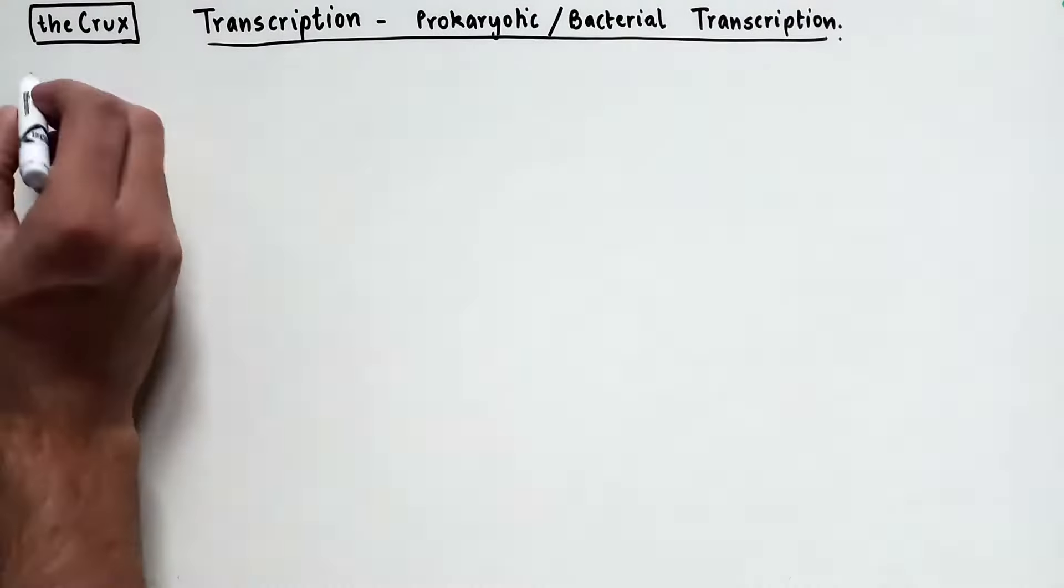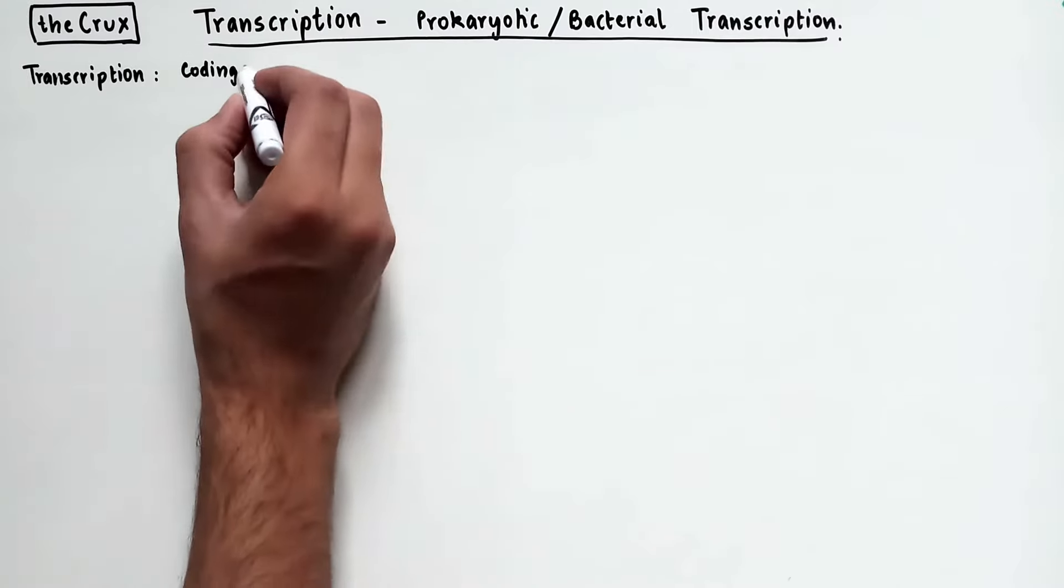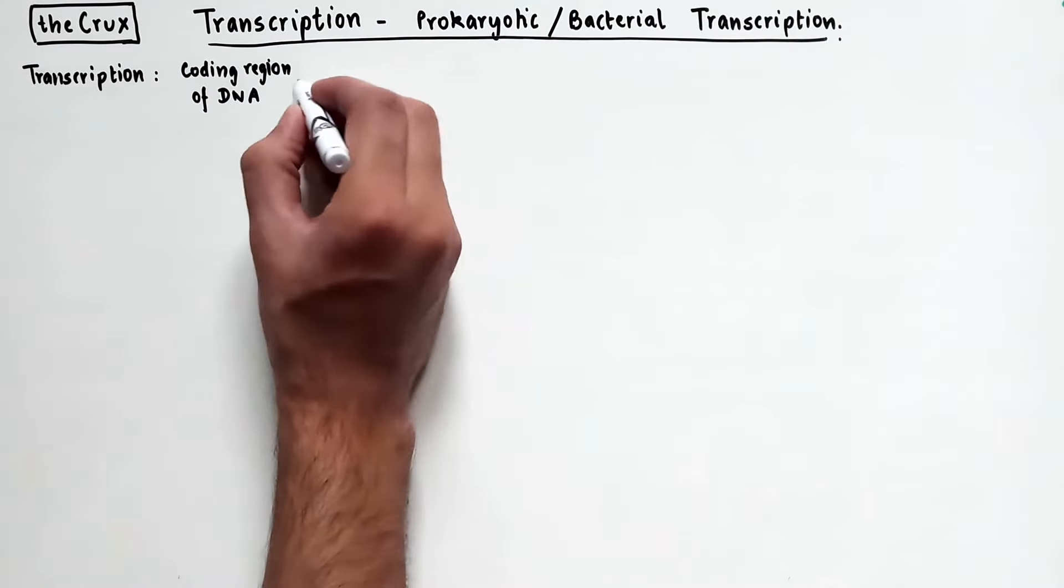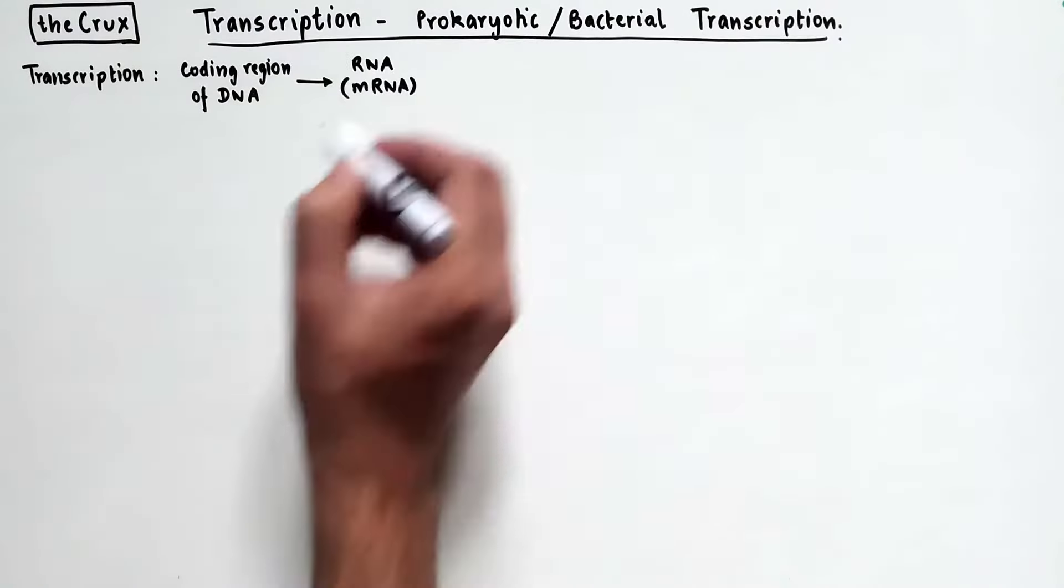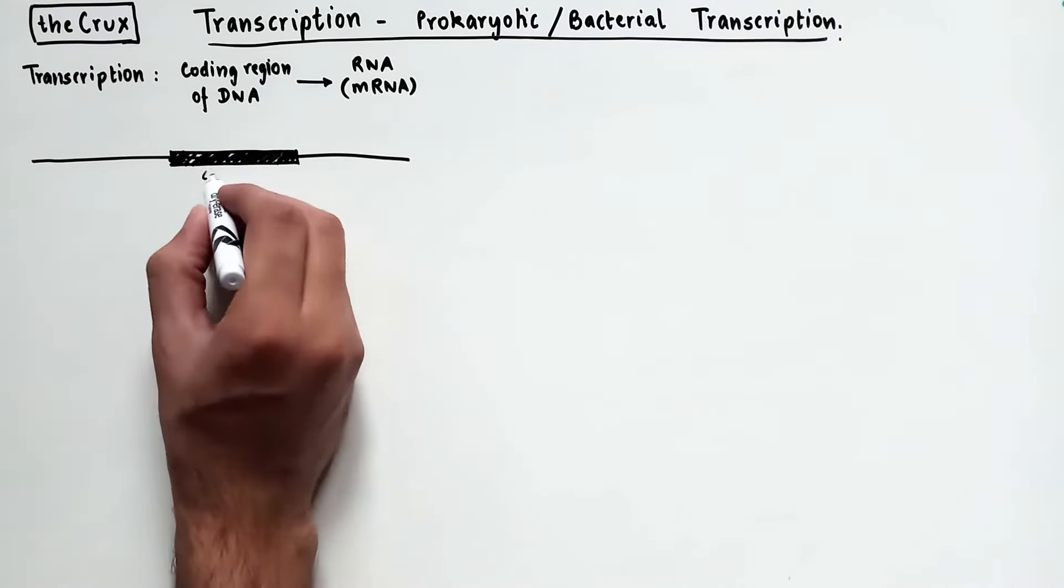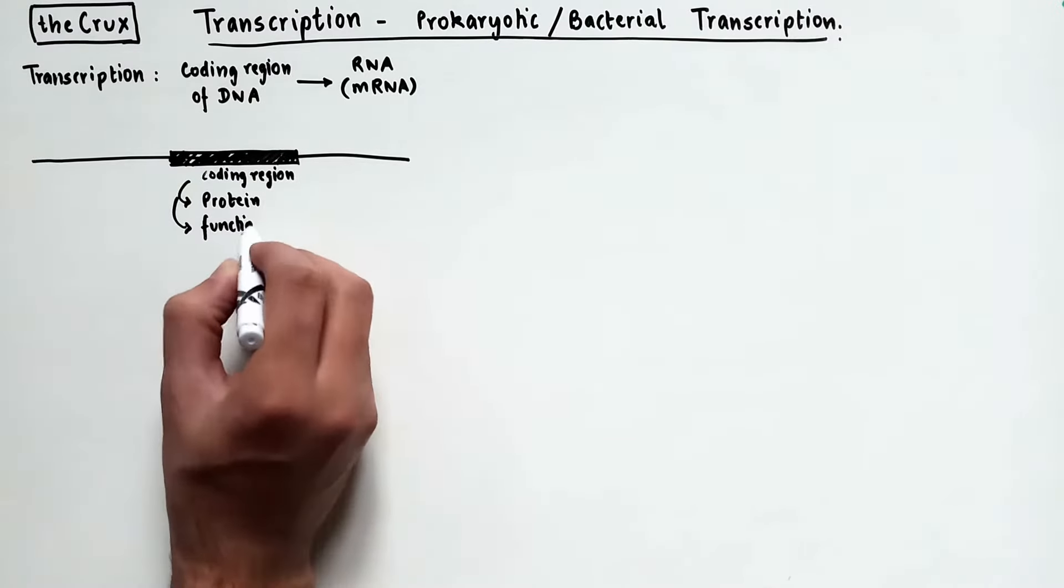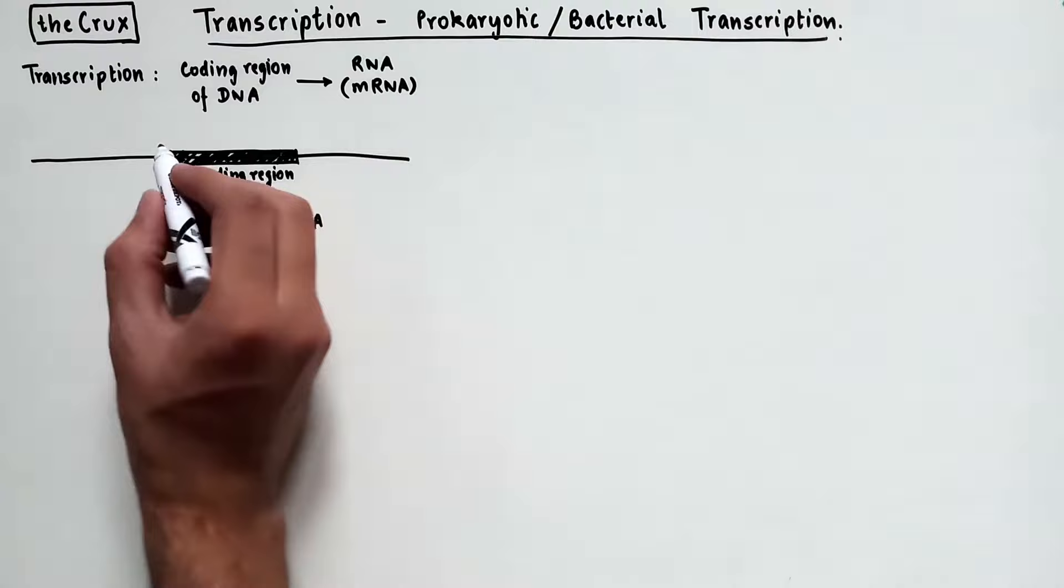So, transcription is the process of genetic information conversion, or transfer, from the coding region of the DNA to a messenger RNA. In a given piece of DNA, for instance a gene, you have the coding region which contains information about the protein it codes, or a functional RNA it codes, like the ribosomal RNA.